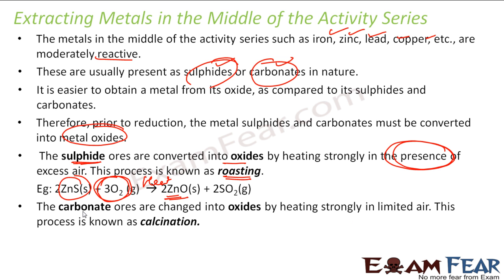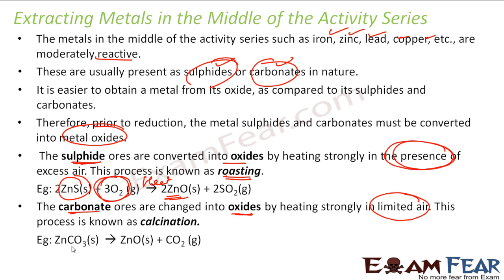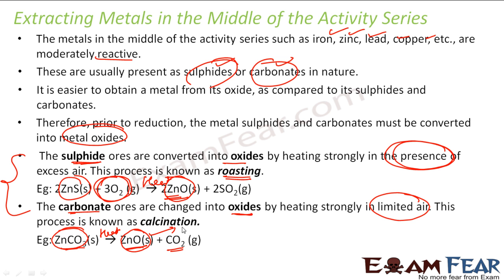Then you have carbonate ores. Carbonate ores can also be converted into oxides by heating in the presence of limited air. This process is called calcination, because no oxygen is required here. So you have zinc carbonate, you heat it, it becomes zinc oxide and carbon dioxide. So zinc carbonate — a carbonate compound — is converted to oxide. Similarly, zinc sulfide is also made into zinc oxide, because it is easy to get zinc from zinc oxide. So if you have carbonate, calcination is used; sulfide to oxide is roasting, carbonate to oxide is calcination.